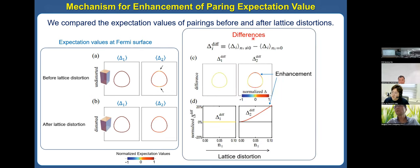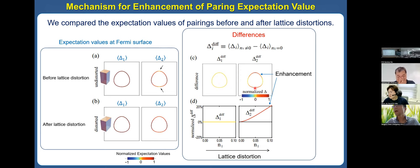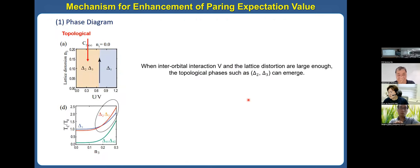To understand this more, we studied the orbital texture of the wave function at the Fermi surface. The wave functions can be decomposed into orbital part and spin part in this system. We draw the orbital texture in the Brillouin zone along X, Y, Z directions. For the tetragonal system — in the absence of lattice distortion — the directions of the two orbitals are parallel, so there is no orbital mixing between them.